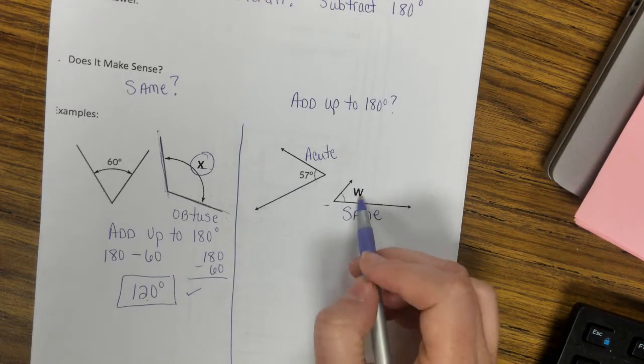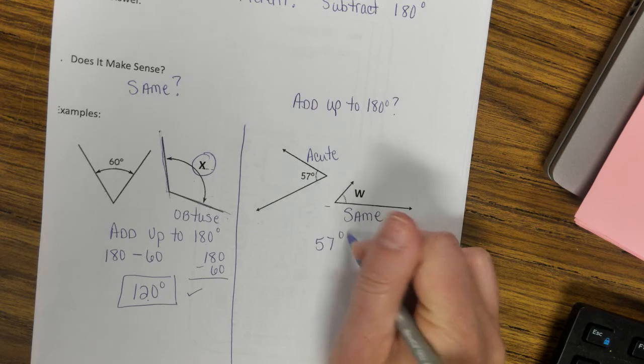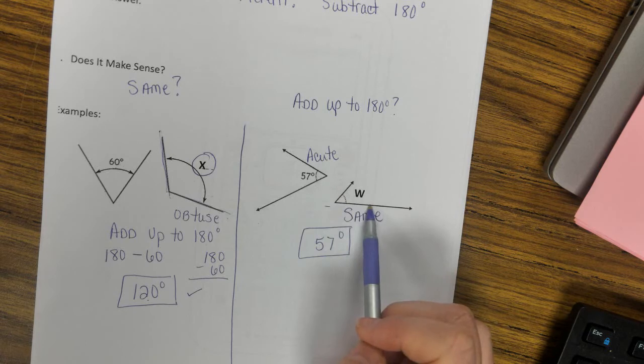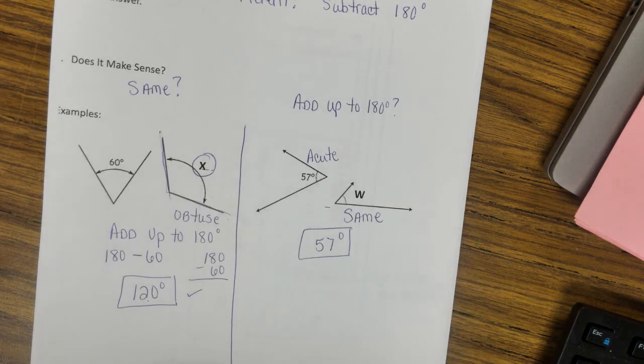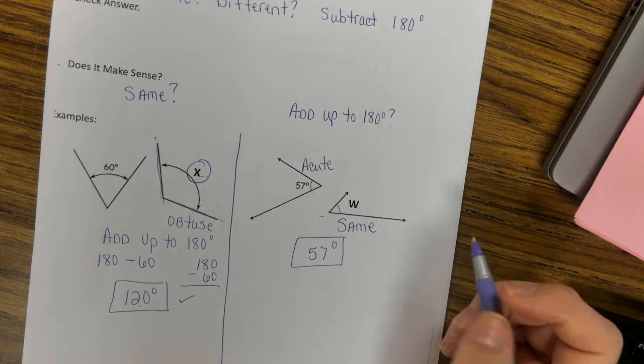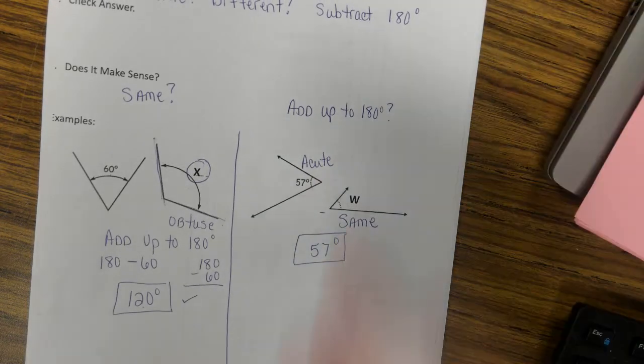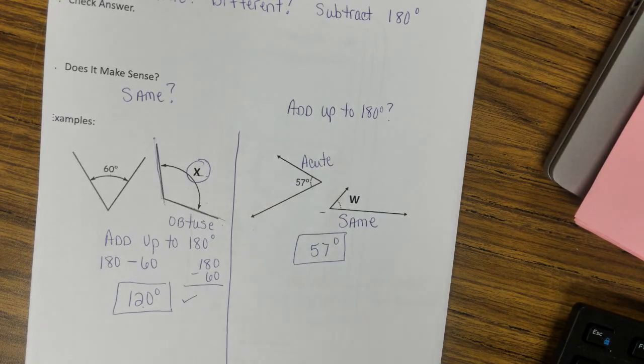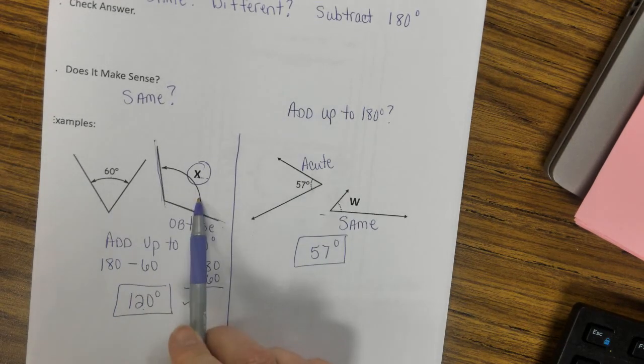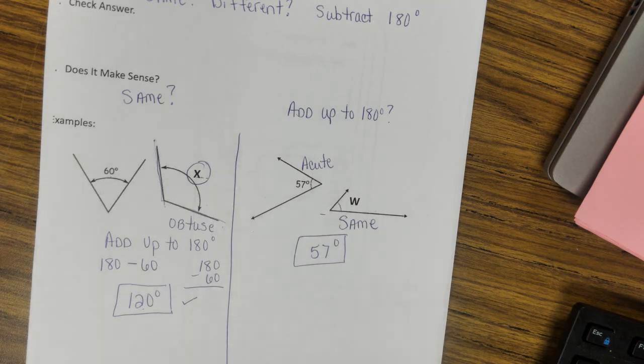So these are the same, and that means angle w is also 57 degrees. That makes sense. These are not going to add up to 180 degrees because two acute angles can't equal 180 degrees. So this time these angles are the same. That's all you're doing—we're just practicing remembering the types of angles and asking ourselves: do these two angles add up to 180 degrees or do they have the same angle measurement? And that's it.